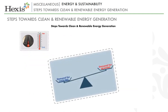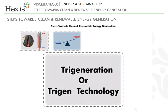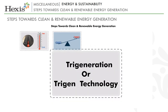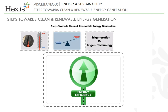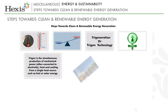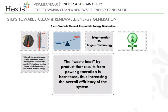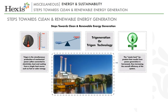In areas with a warm climate where demand for cooling is greater than the demand for heating, Trigeneration (or Trigen) technology may have a role to play in increasing energy efficiency. Trigen is the simultaneous production of mechanical power (often converted to electricity), heat, and cooling from a single heat source such as fuel or solar energy. As with co-generation, the waste-heat by-product from power generation is harnessed, thus increasing the overall efficiency of the system.